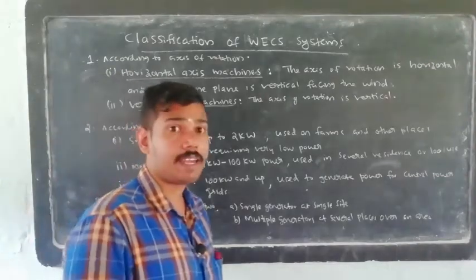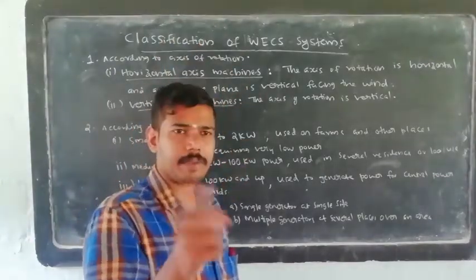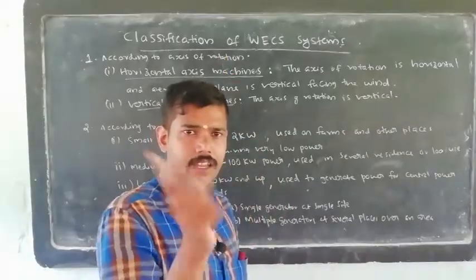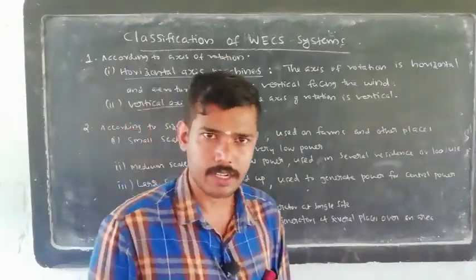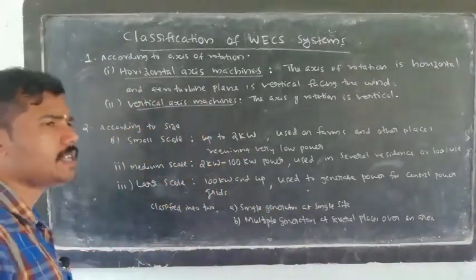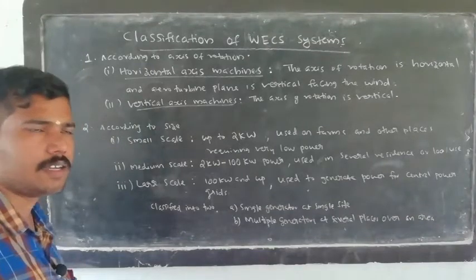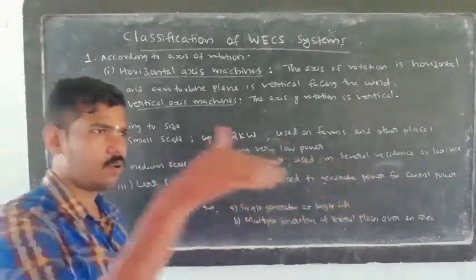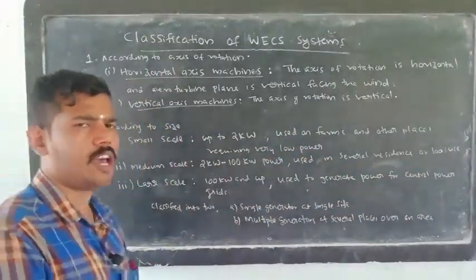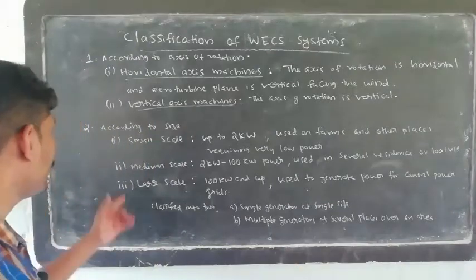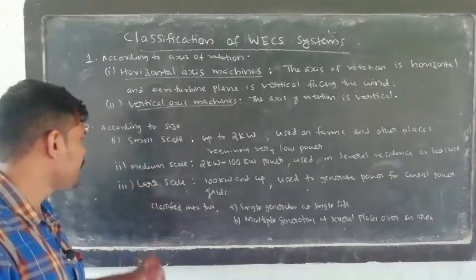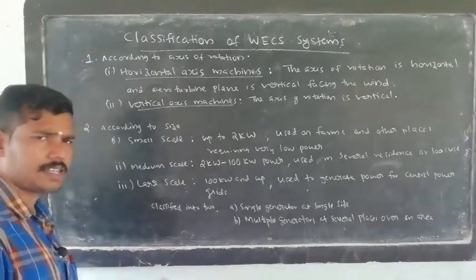For vertical axis machines, the axis of rotation is vertical. For horizontal axis machines, the axis is horizontal. Now, moving on to size classification, we have three categories: small scale, medium scale, and large scale.